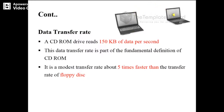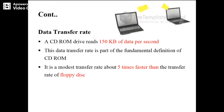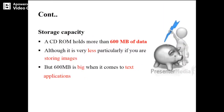The next point is data transfer rate — how long it takes to transfer data. A CD-ROM drive usually reads 150 kilobytes of data per second, which is part of the fundamental definition of CD-ROM. Compared to a floppy disk, which has a very slow transfer rate, CD-ROM is about five times faster. So data transfer rate is a strength of CD-ROM.